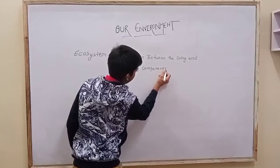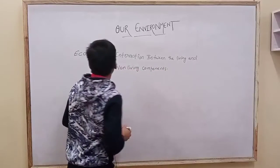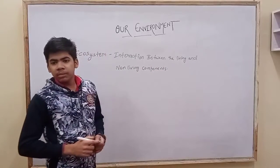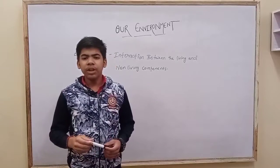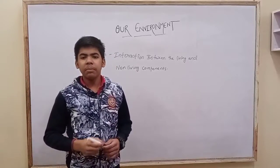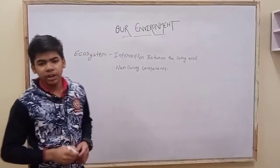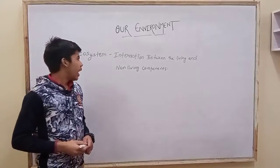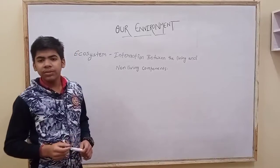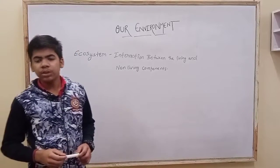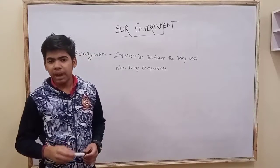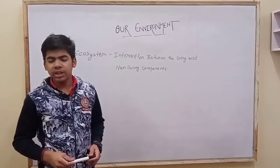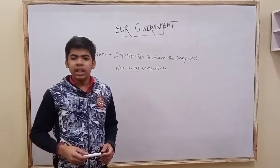The two main components of an ecosystem are biotic and abiotic components. The ecosystem further divides into two types: natural ecosystem and artificial ecosystem.